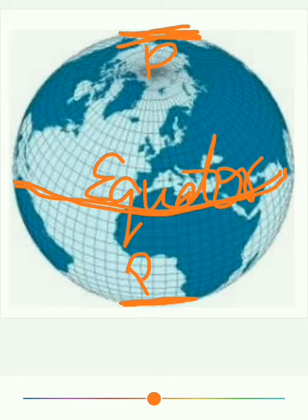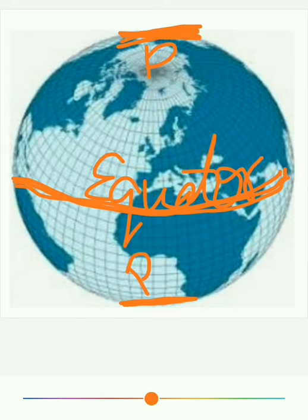At the poles Earth is flattened. At the equator part Earth is bulging. Any guess? What is the shape of Earth? This shape of Earth we call geoid.